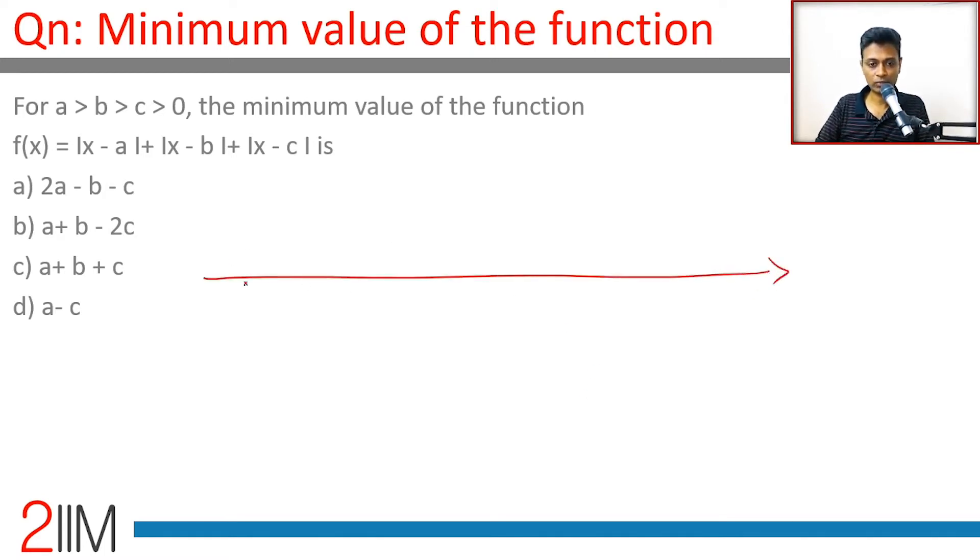use the number line approach. Two key ideas: first, if you have two points p and q, the distance between them is |p - q|. Second, if q > p, then q will be to the right of p. In our question, a > b >